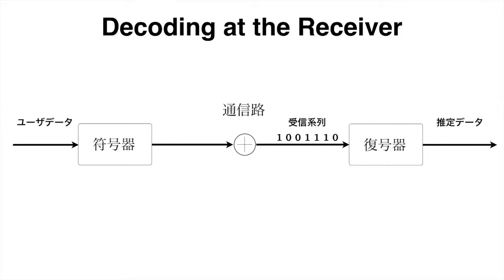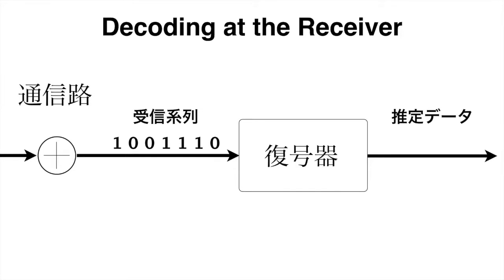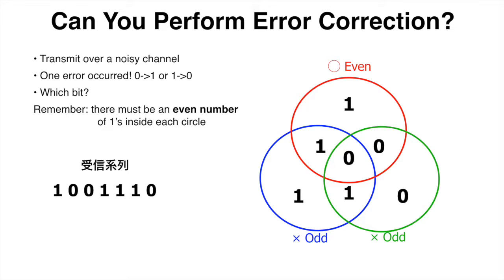A codeword is then transmitted over a noisy channel, but at the receiver side we don't know which codeword was transmitted and we don't know where the error occurred. Either a zero is changed to a one or a one is changed to a zero. We write the bits from the received sequence inside of the intersections of the circles. You can see that the red circle has an even number of ones, but the blue and green circles have an odd number of ones. Which bit of the received sequence should we change so that all three circles have an even number of ones?